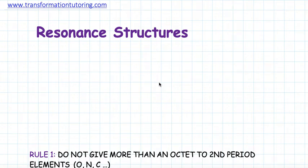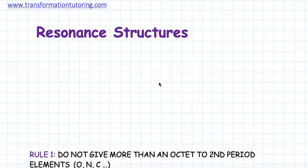In this lesson, we will learn how to correctly predict resonance structures and how to draw the correct arrows for them. Resonance structures are different forms of the same molecule where electrons get rearranged. It's important to note that only electrons get rearranged — the atoms and the connections stay the same.